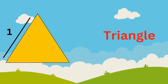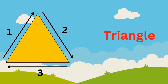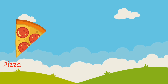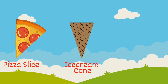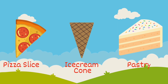Triangle. A triangle has three sides and three corners. Let's see which objects we have in our surroundings which are triangle in shape. Pizza slice, ice cream cone, pastry — they are triangular in shape.